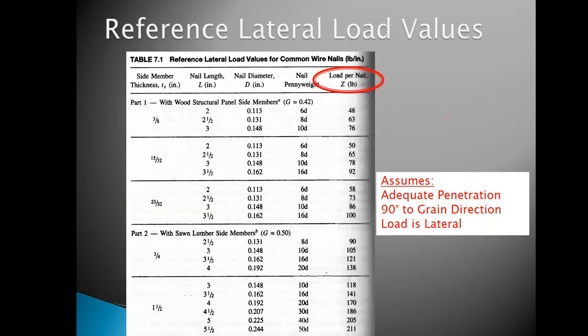This is the design table we'll use—it's on Learning Suite, the fourth supplemental table. There are two parts: the upper part is for structural side panel members, typically sheeting materials like 3/8 inch, 15/32 inch, or 23/32 inch sheets. This is the piece you drive the nail through initially; ensure the back piece has sufficient depth for full embedment. Part 2, which I prefer, deals with sawn lumber side members.